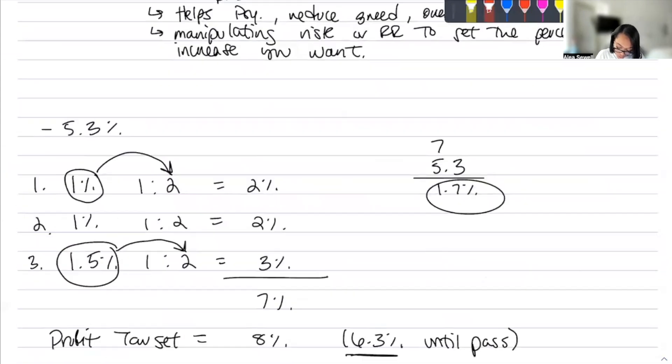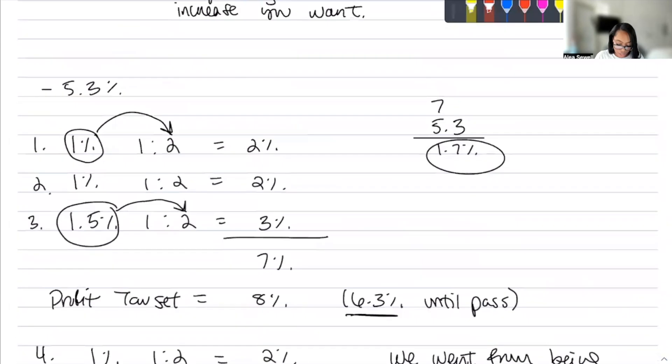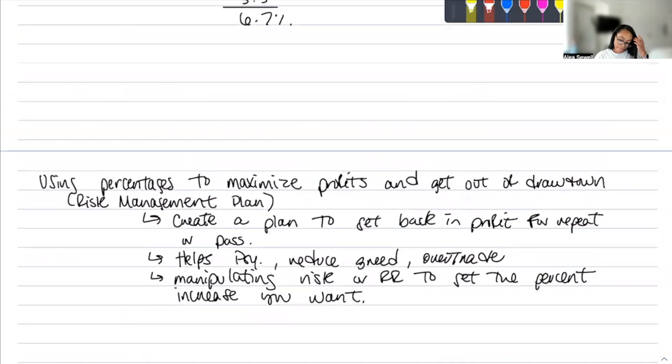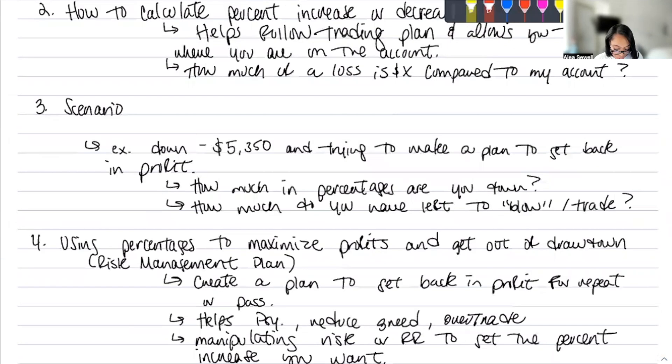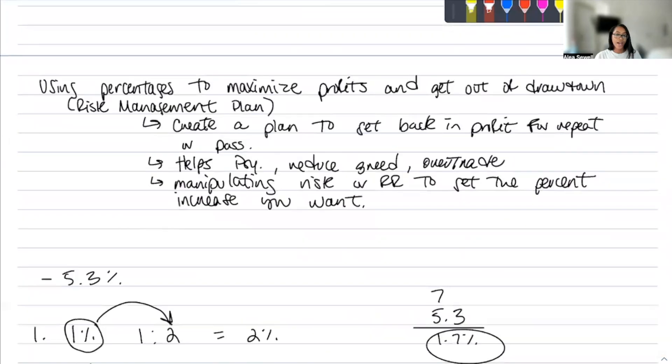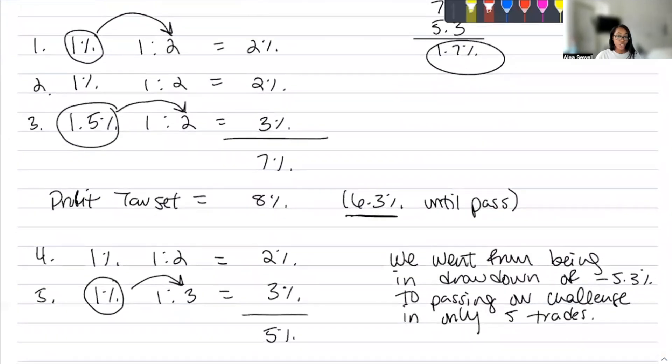And this also helps your psychology, reduce greed. So that over-trading, thinking you need to take so many trades a day to pass, in all actuality, you do not. So I hope this was helpful. Let me just make sure I went over all the points. I hope this was helpful. If you still have questions about percentages, put it in the comments. I don't mind making a part 2. A few people have reached out to me on how I use percentages and how I calculate my risk and things like that. But I will see you guys in the next video.